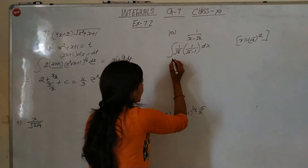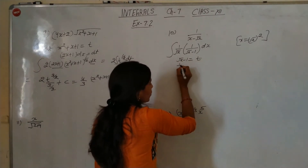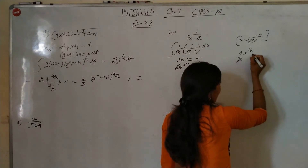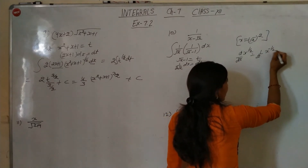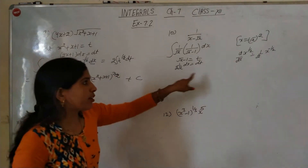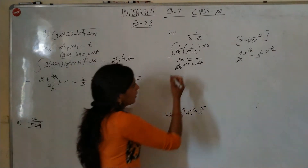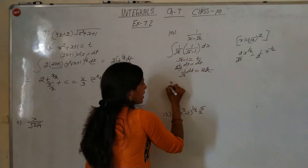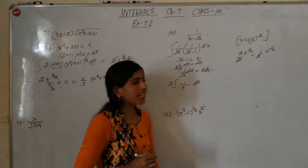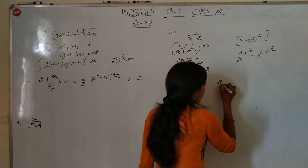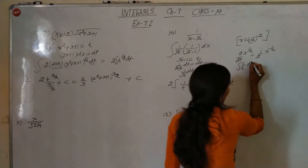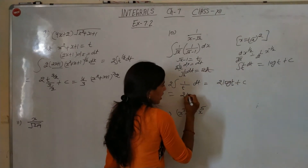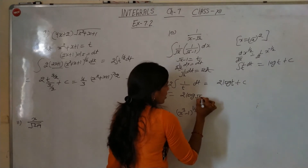For the next problem, we take root x minus 1 and put it equal to t, so 1 by 2 root x dx equals dt, meaning 1 by root x dx equals 2 dt. The integral of 1 by t gives log t, so the answer becomes 2 log(root x minus 1) plus C.